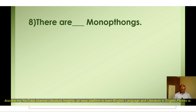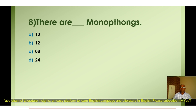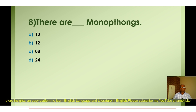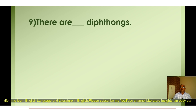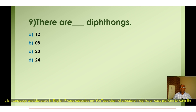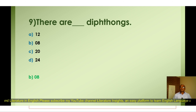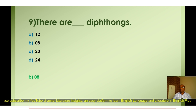Question number eight: How many monophthongs are there in vowels? Options: A) 10, B) 12, C) 8, D) 24. And question nine: How many diphthongs are there? Options: A) 12, B) 8, C) 20, D) 24. The correct option is B) 8 — there are eight diphthongs in vowels. Vowels are divided into two parts: monophthongs (single vowel) and diphthongs (double vowel).